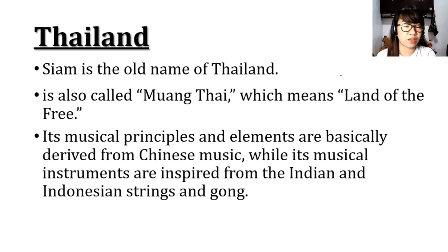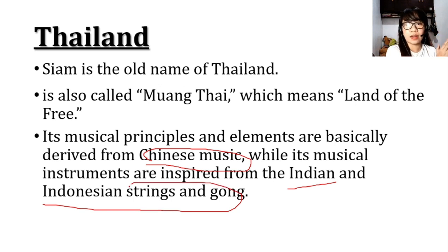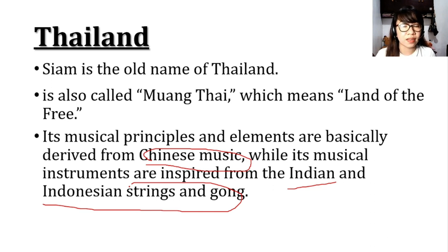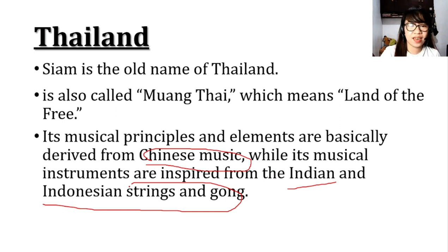Thailand's musical principles and elements are basically derived from Chinese music, while its musical instruments are inspired by Indian and Indonesian strings and gongs. So they combined Chinese musical principles and elements with Indian and Indonesian musical instruments to create their own unique music.